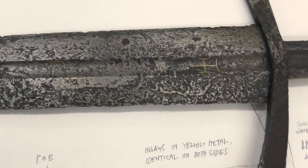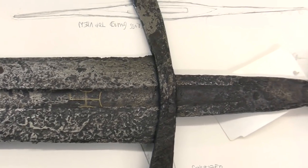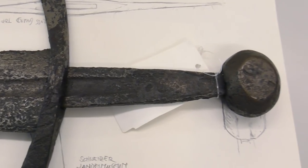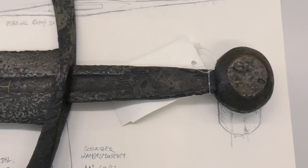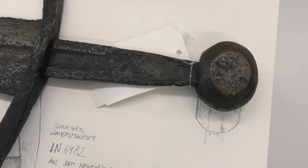You can see how the fuller extends into the tang of the blade, which in turn is peened over a fairly small wheel pommel, or rather a disc pommel with a chamfered edge.